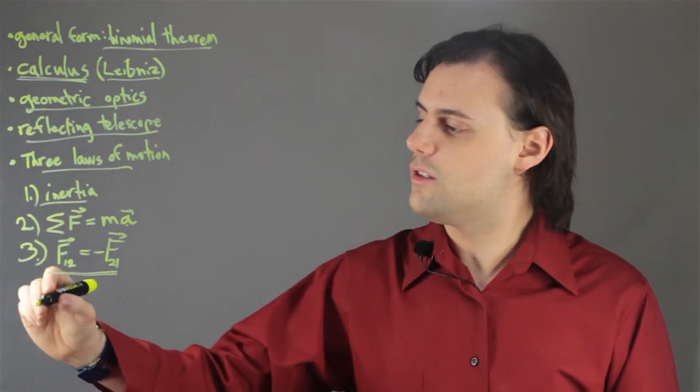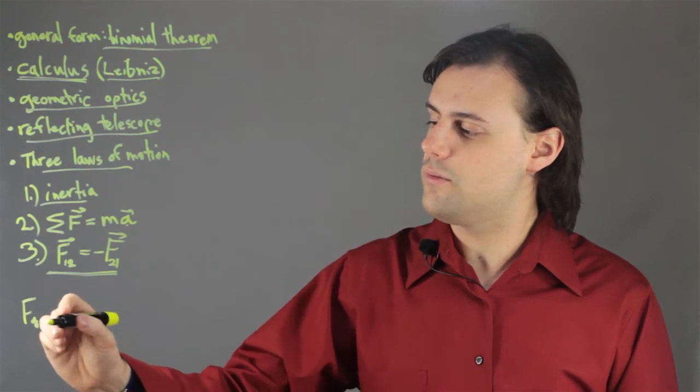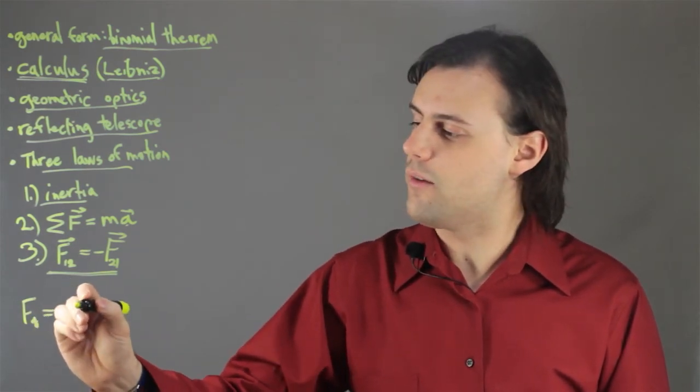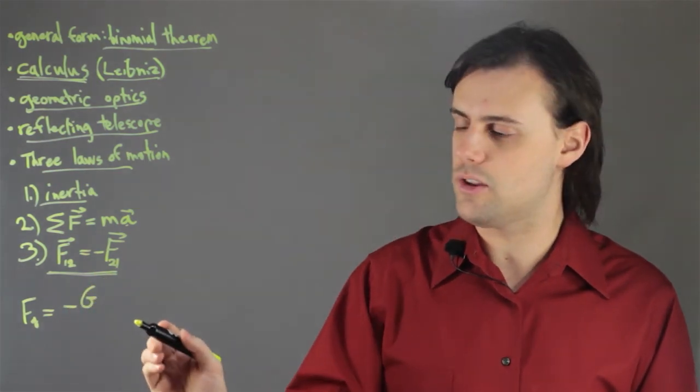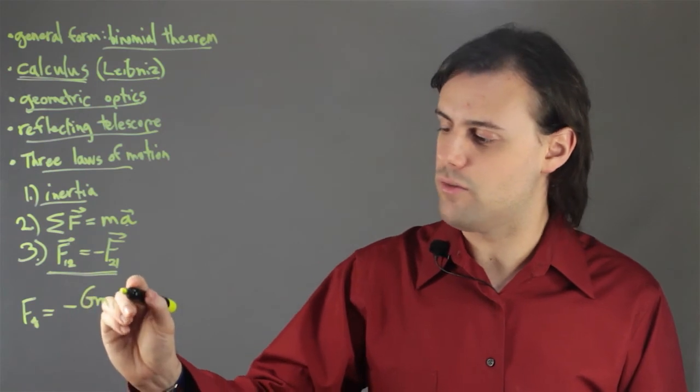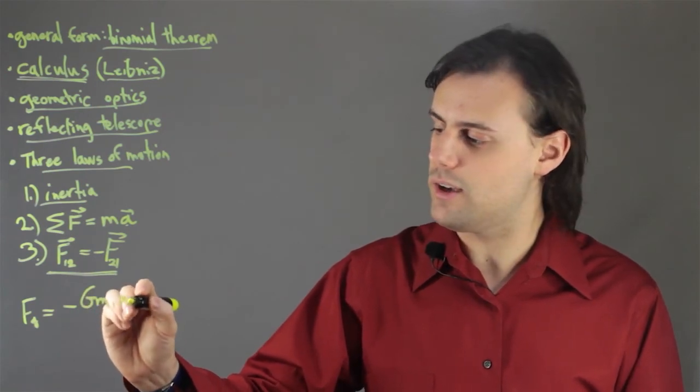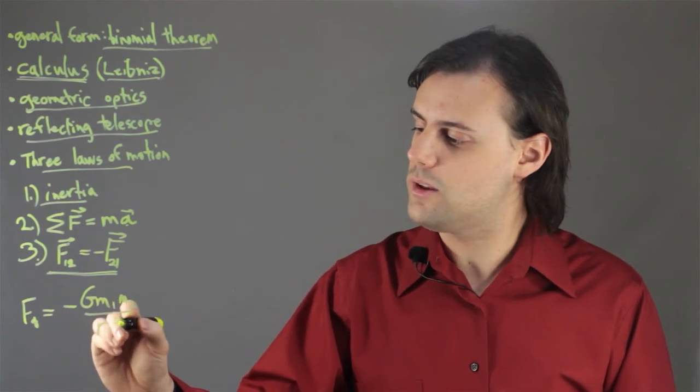Finally, there's the famous inverse square law of gravity, in which the force of gravity is given by negative G, capital G being the universal gravitational constant, times the mass of one body, times the mass of the second body divided by the distance between them squared.